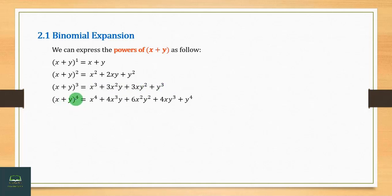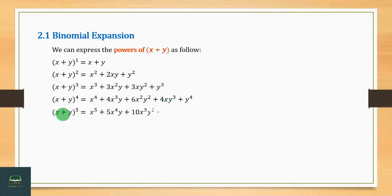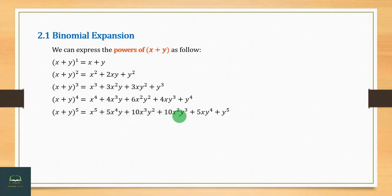x plus 1 to the power 4 equals x to the 4th plus 4x cubed plus 6x squared plus 4x plus 1 to the 4th. x plus 1 to the power 5 equals x to the 5th plus 5x to the 4th plus 10x cubed plus 10x squared plus 5x plus 1 to the 5th.